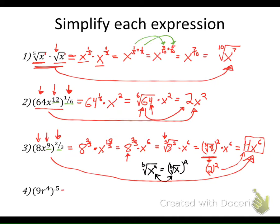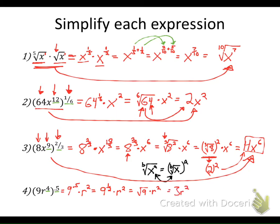For the last problem, the exponent of 0.5 applies to both 9 and r to the fourth. For the r term, raising a power to a power means multiplying exponents: 4 times 0.5 gives r squared. Rewriting 0.5 as 1/2 makes it clearer — an exponent of 1/2 means a square root. So we take the square root of 9, which is 3, giving a final answer of 3r squared.